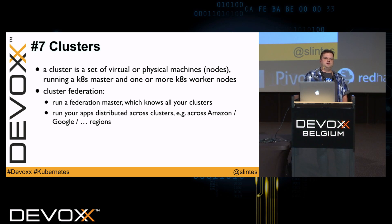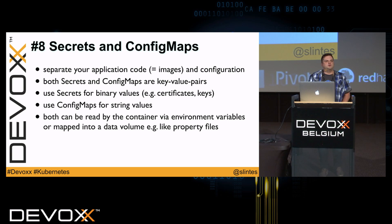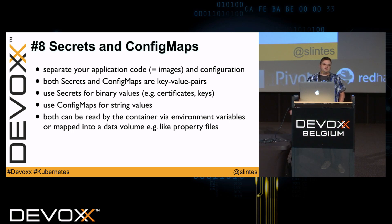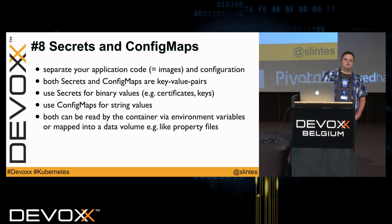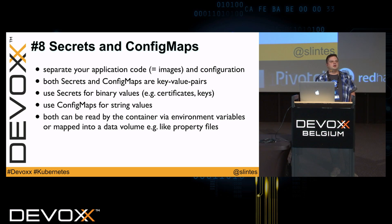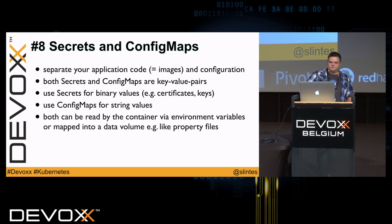That's basically everything you need to run your application in Kubernetes, but there are more useful features. The first are secrets and config maps — you don't want your configuration inside your Docker image. Both are key-value stores readable at runtime by the container. The values of secrets are binary — for example for certificates and keys — while the values of config maps are string values.